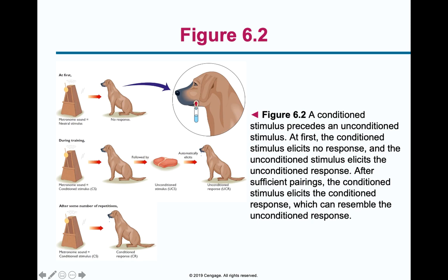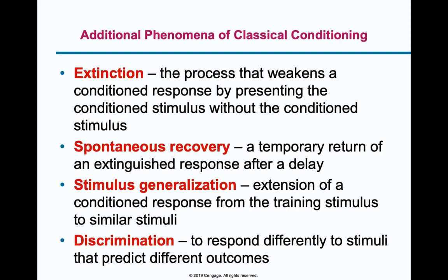Extinction occurs when — let's say I have the bell and I have the dog. Bell, steak, salivate. Then I ring the bell and the dog begins to salivate. But what happened if I didn't give him the steak? If I ring the bell and don't give the dog a steak, he'll salivate. If I ring the bell again and the dog doesn't get a steak, he'll still salivate. But then maybe on the third, fourth, fifth time he hears the bell, because there's no steak, no reward, the dog no longer salivates. So that's the idea of extinction — this process of the conditioned response created by the bell goes away over time if it is not rewarded with the steak.